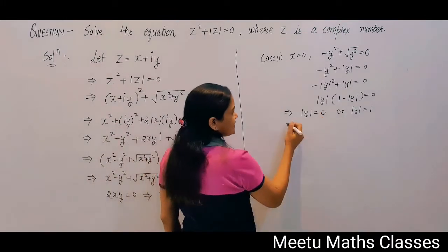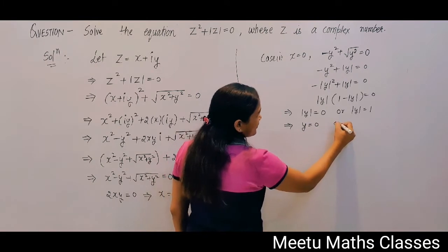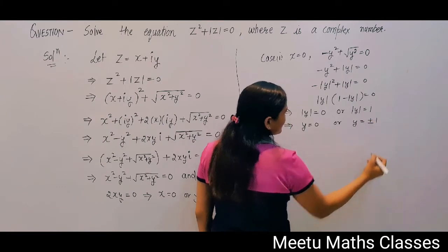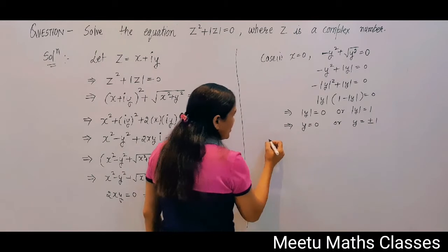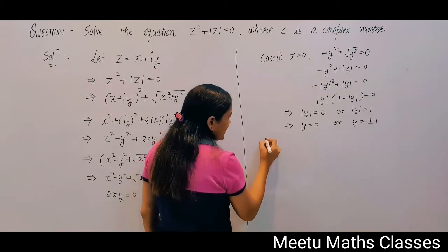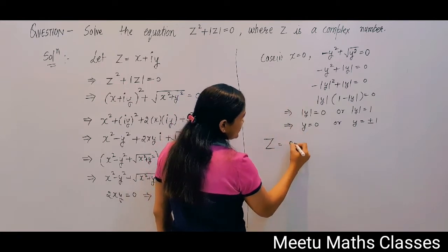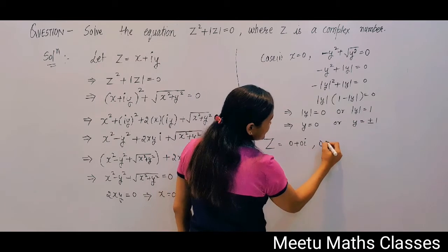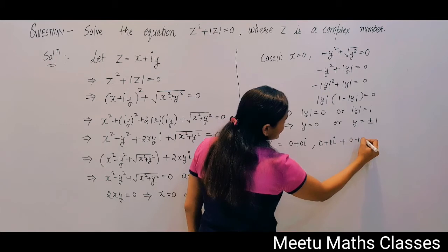From |y| = 0, we get y = 0. From |y| = 1, we get y = +1 or y = −1. So when x = 0, the three sub-cases are: (x = 0, y = 0), (x = 0, y = 1), and (x = 0, y = −1).